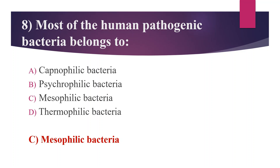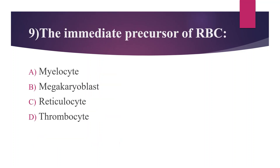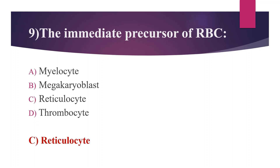Ninth question: the immediate precursor of red blood cells. Option A: myelocyte. Option B: megakaryoblast. Option C: reticulocyte. Option D: thrombocyte. The answer is Option C, reticulocyte.